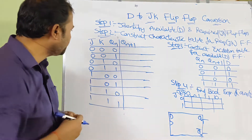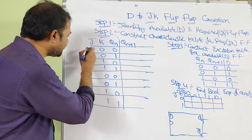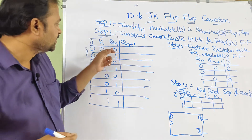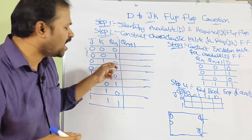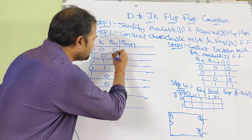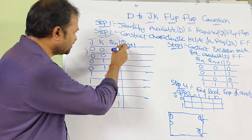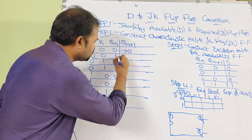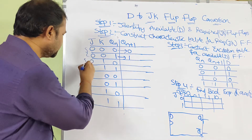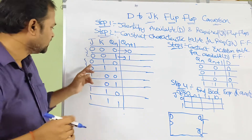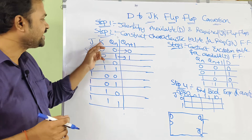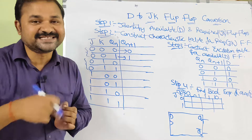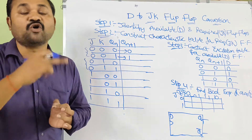Next, let us see the output. We know about the JK characteristic table. If the inputs J and K are both 0, then there is no change in the output — the current state Qn is the same as the next state Qn+1. If K is 1 (inputs 0,1), K means reset, so the output is reset, meaning the output is 0.